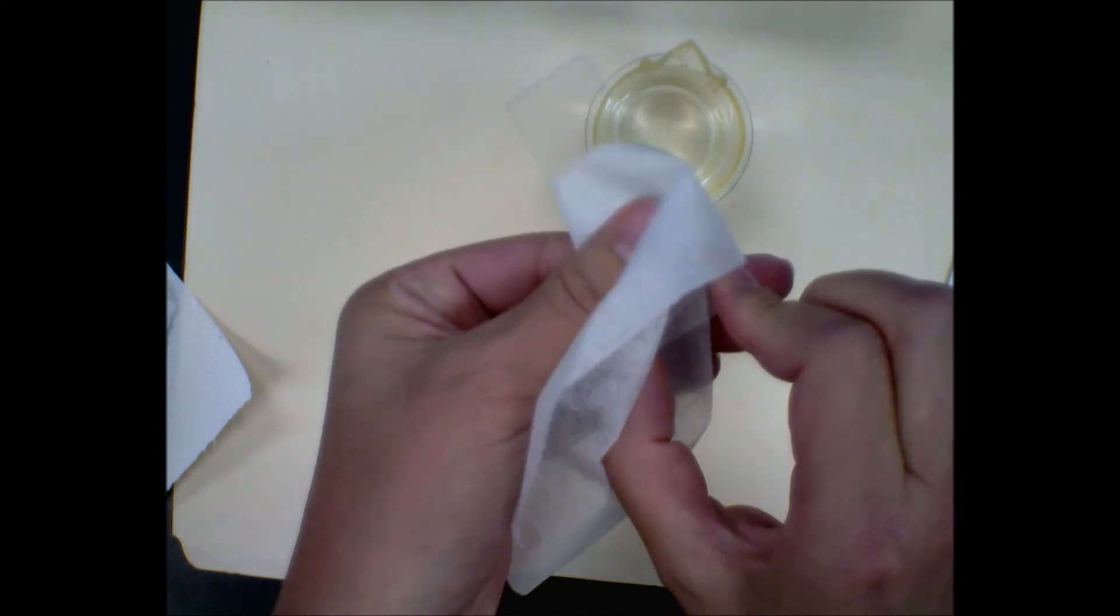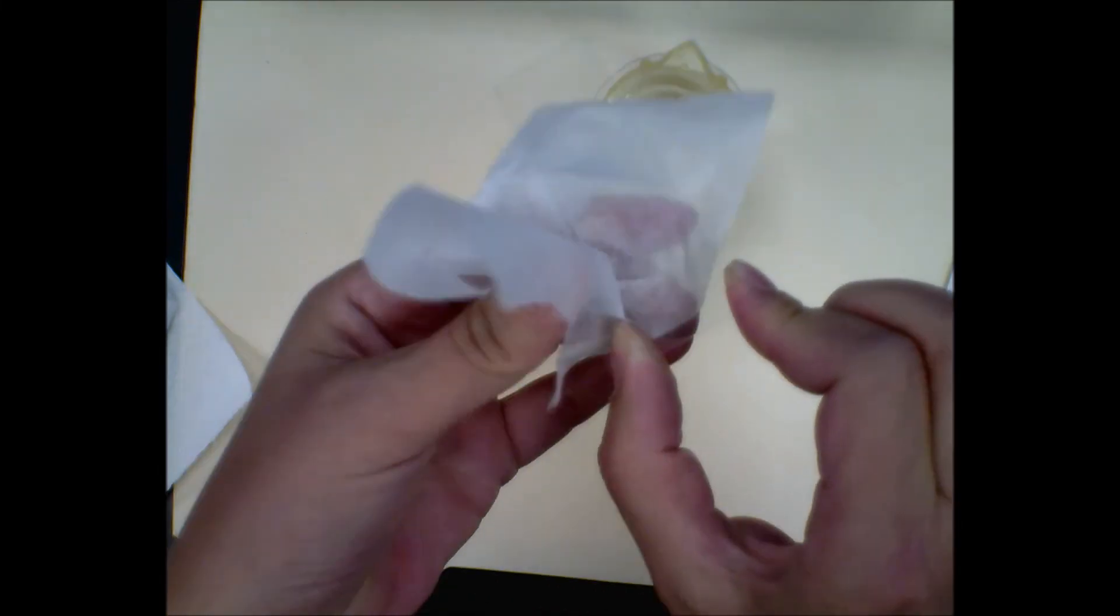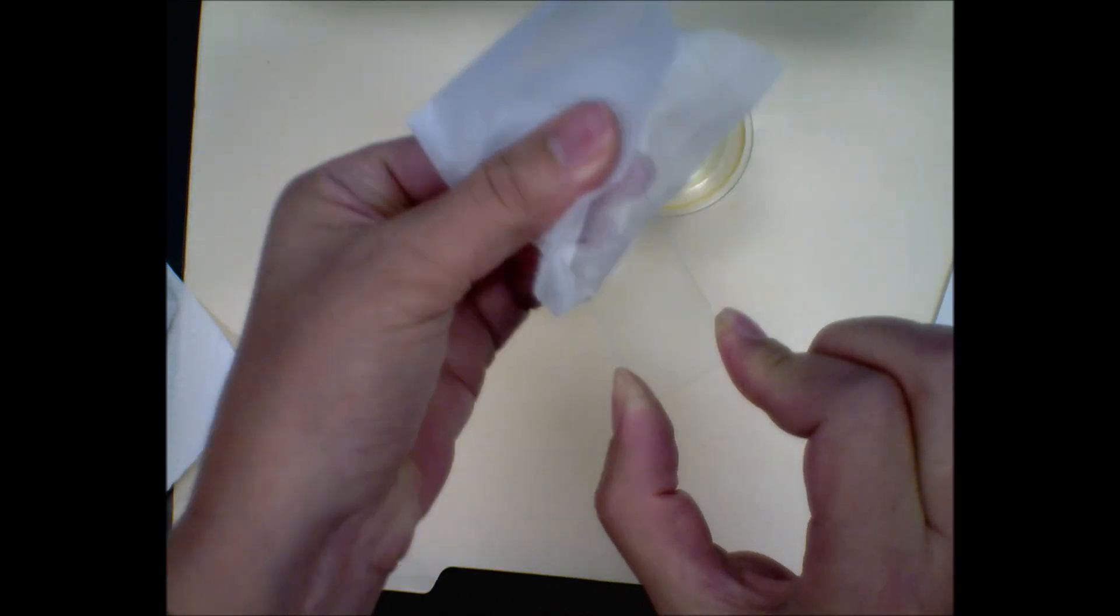Again, when you are done, you do the last bit with lens paper. Make sure you don't have your fingers on it, because then you just smear a bunch of oil on it.